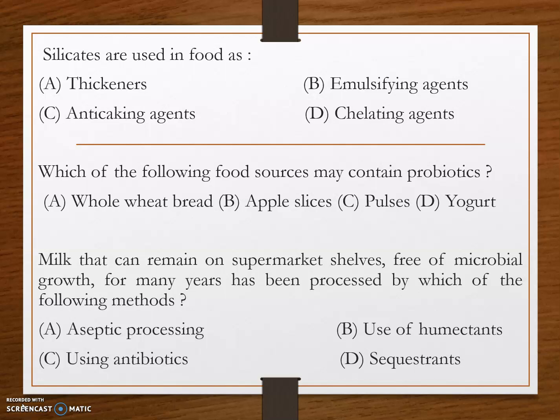Thickeners are additives added to material to increase its viscosity without changing other properties. Emulsifying agents stabilize an emulsion — the best example is lecithin, an emulsifying agent present in egg yolk, which is added to food to stabilize the emulsion.